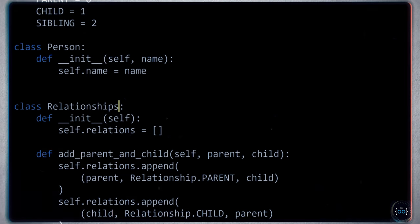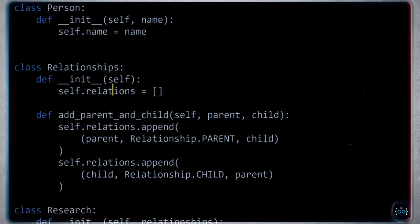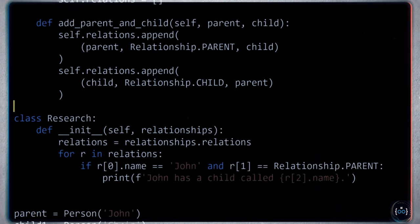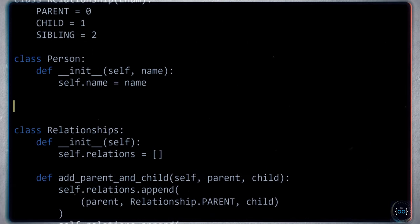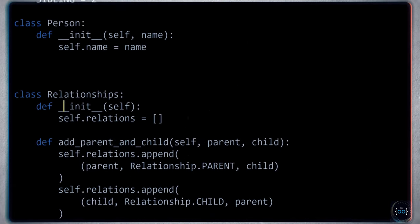This is better because if you change the implementation of relations, you can rewrite find_all_children_of to continue working, and clients who depend on the abstraction won't have their code break. Research now takes a browser as argument and calls browser.find_all_children_of('John'), printing results. Research is the high-level module; Relationships is the low-level module. If you change storage to a database, the Research module will not break because it no longer depends on the concrete implementation.